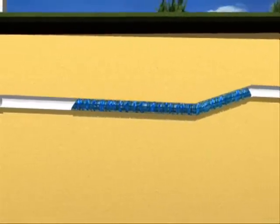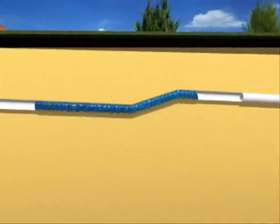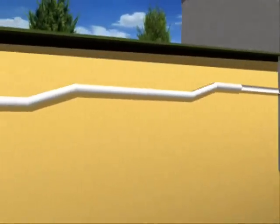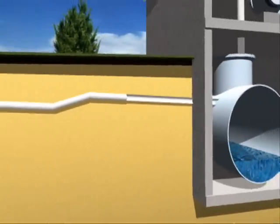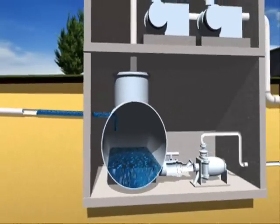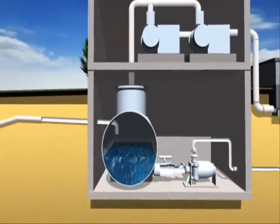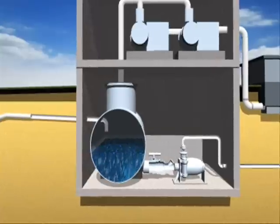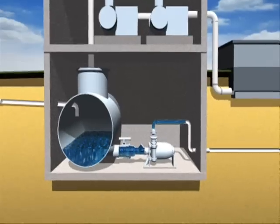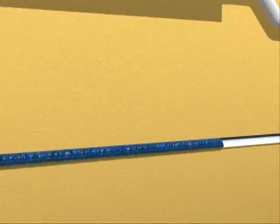The QuaFaq vacuum main is laid as a so-called sawtooth profile at a 0.3% grade, provided with pockets and installed in shallow trenches. The QuaFaq vacuum pump station contains a sewage collection tank, vacuum pumps, a control panel and discharge pumps to transfer the wastewater to a sewage treatment plant.